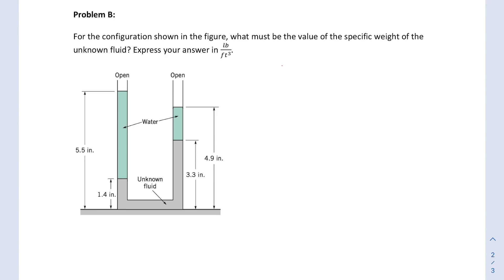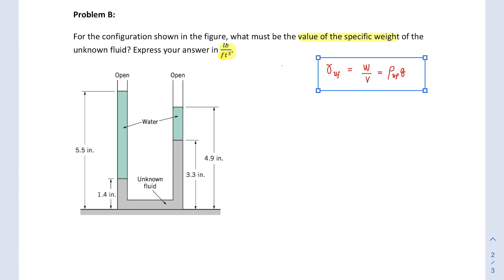This is the second problem on manometry. For the configuration shown in the figure, you are tasked to find the specific weight of the unknown fluid, expressed in pounds per cubic feet. The specific weight of the unknown fluid (uf) is equal to the weight per given volume — it describes the heaviness of a fluid per given volume — and is also equal to the density of the fluid multiplied by the acceleration due to gravity. This will be one of the most central equations used in this solution.